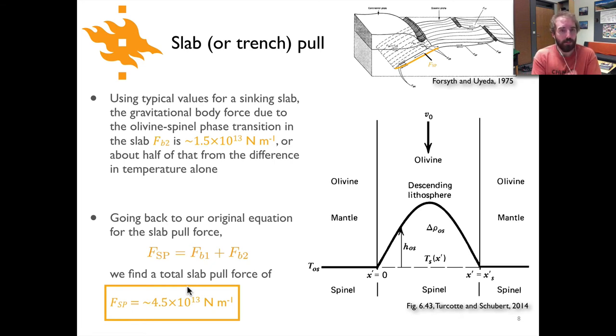If we then go to our original equation and add those two together, we find that the combined total slab pull force is about 4.5 × 10¹³ newtons per meter. Try to have that number in mind for reference in the next video lecture where we'll look at the ridge push force and the drag force as well.